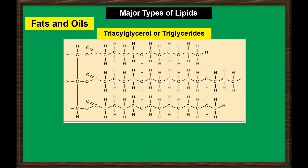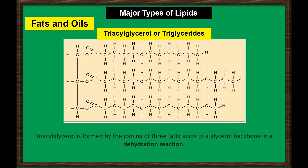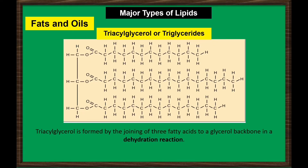The number of carbons in the fatty acid may range from 4 to 36, with the most common being those containing 12 to 18 carbons. Triglycerides are formed by the joining of three fatty acids to a glycerol backbone in a dehydration reaction. Three molecules of water are released in the process.